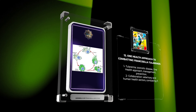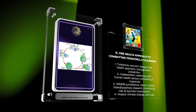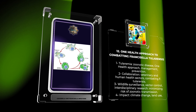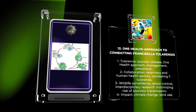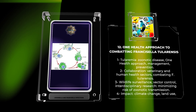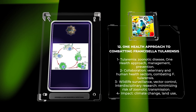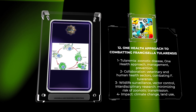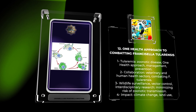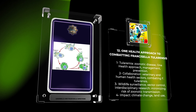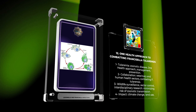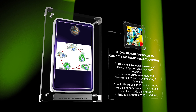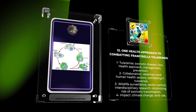Targeting virulence factors represents a promising approach for developing novel therapeutics against tularemia. We will dive into the key virulence determinants of F. tularensis and their potential as therapeutic targets, discussing current advancements in the development of vaccines and small molecule inhibitors that interfere with critical virulence pathways. We will also explore the challenges associated with targeting virulence factors and the strategies employed to overcome them.